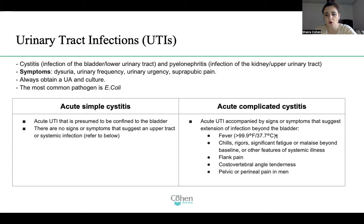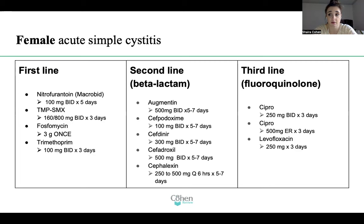Now that you understand the differences between simple versus complicated, let's see how we treat each. For female acute simple cystitis, first line will always be nitrofurantoin (Macrobid) 100 mg twice daily times five days. Then you have Bactrim, 160/800 mg twice daily times three days. You could also give fosfomycin three grams once.